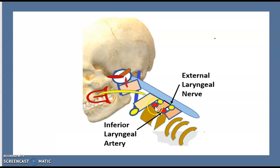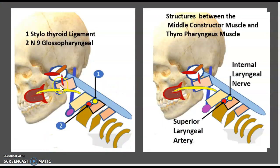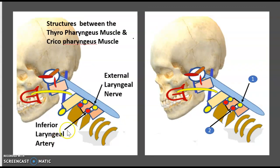There is also a tiny space between the thyrohyoid pharyngeus muscle and the cricopharyngeus muscle. This space is occupied by the external laryngeal nerve, a branch of the vagus nerve, and the inferior laryngeal artery. To recap: between the superior and middle constrictors is the glossopharyngeal nerve; between the middle constrictor and thyrohyoid pharyngeus are the internal laryngeal nerve and superior laryngeal artery; and between thyrohyoid pharyngeus and cricopharyngeus are the external laryngeal nerve and inferior laryngeal artery.